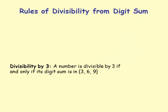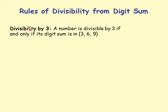Let's restate the rules of divisibility. Divisibility by 3: a number is divisible by 3 if and only if its digit sum is in the set {3, 6, 9} — either 3 or 6 or 9.